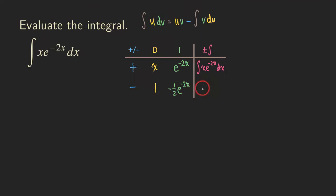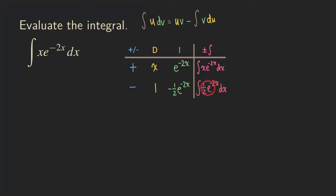For the fourth column, multiplying all entries together: negative 1 times 1 times negative one-half gives positive one-half, so the integral in the fourth column is one-half times e to the negative 2x dx. As you can see, we can integrate this directly because it's a simple exponential function. When we reach an integral that's easy to integrate, we can stop — we don't need to continue the integration table anymore.